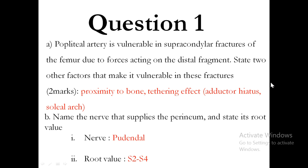The first question has two parts, A and B. Part A: the popliteal artery is vulnerable during supracondylar fractures of the femur due to forces acting on the distal fragment. State two other factors that make it vulnerable in these fractures.